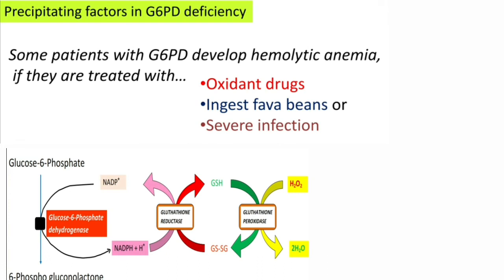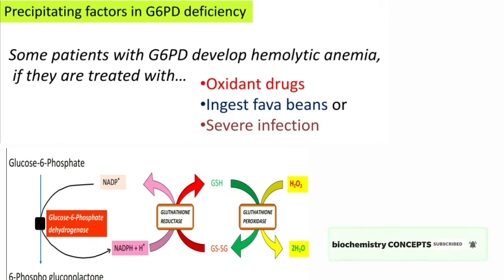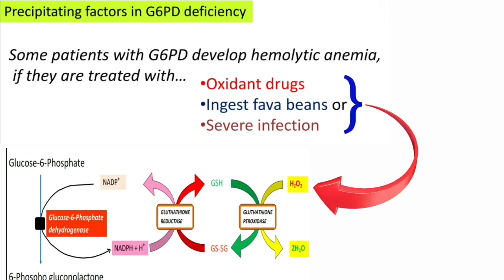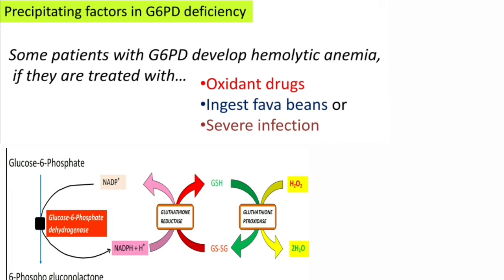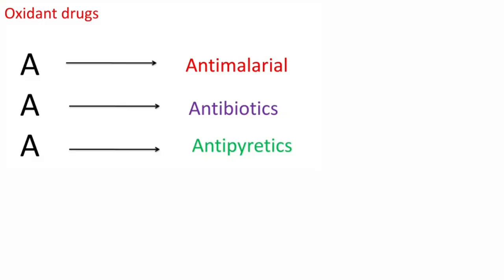Coming to precipitating factors in G6PD deficiency: generally, most individuals who have inherited this G6PD mutation do not show any clinical manifestations and are asymptomatic. However, some patients with G6PD deficiency develop hemolytic anemia if they are treated with oxidant drugs, ingest fava beans, or have a severe infection.